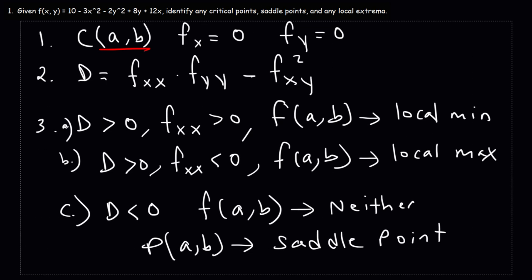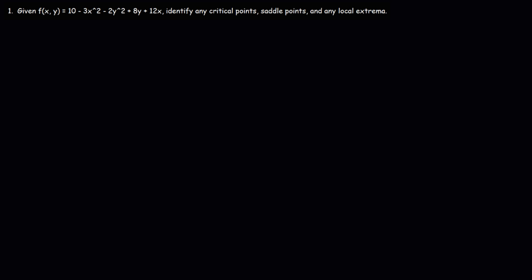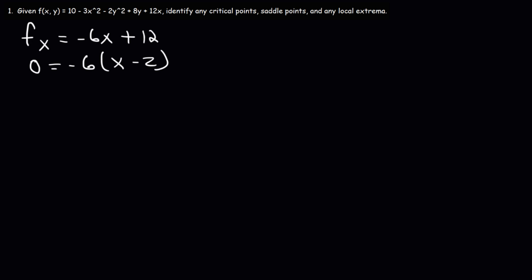Number one: given that f of x, y is equal to 10 minus 3x squared minus 2y squared plus 8y plus 12x, identify any critical points, saddle points, and any local extrema. The first thing we're going to do is find the partial derivative with respect to x. The derivative of 10 is 0. The derivative of negative 3x squared is negative 6x. y is treated as a constant, so the derivative of 2y squared and 8y is 0. The derivative of 12x is positive 12. Setting f sub x equal to 0 and factoring out a negative 6, we can see that when x is 2, the partial derivative with respect to x will be 0.